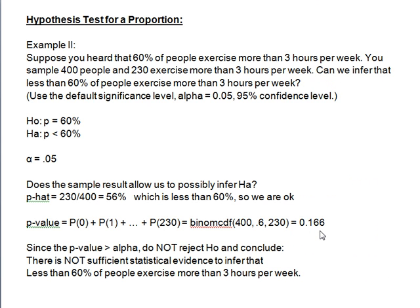So that's our p-value — the probability of obtaining the same results or more extreme under the assumption of the null. That is not very unlikely: about a 16-17% chance. It's not less than our willingness to make an error, not less than 5%, so we do not reject H0. Since the p-value is greater than alpha, do not reject H0 and conclude: there is not sufficient statistical evidence to infer that less than 60% of people exercise more than 3 hours per week. I hope you find that helpful.